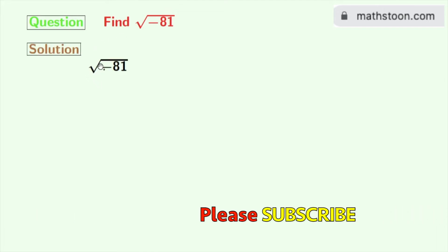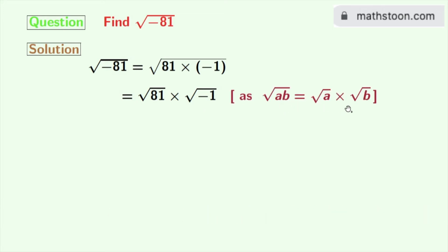Square root of minus 81 can be written as square root of 81 times minus 1. Now we will derive this as square root of 81 times square root of minus 1, using the rule that square root of AB is equal to square root of A times square root of B. Here A is 81 and B is minus 1.